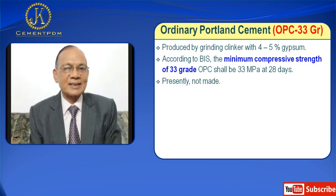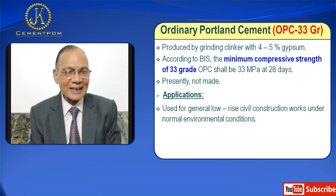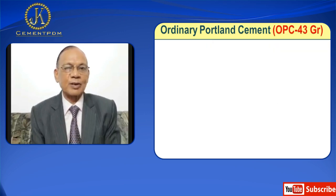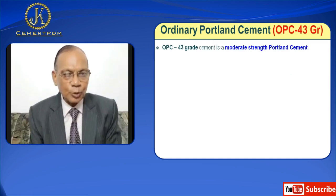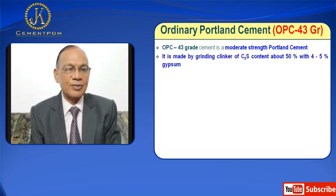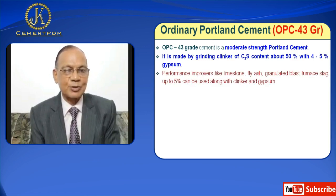Presently, OPC 33 grade is not being made in India. Its applications include general low-rise civil construction work under normal environmental conditions. Next, we have Ordinary Portland Cement 43 grade, OPC 43. OPC 43 grade cement is a moderate strength Portland cement. It is made by grinding clinker with C3S content of about 50% with 4–5% gypsum. Performance improvers like limestone, fly ash, and granulated blast furnace slag up to 15% can be used along with clinker and gypsum.